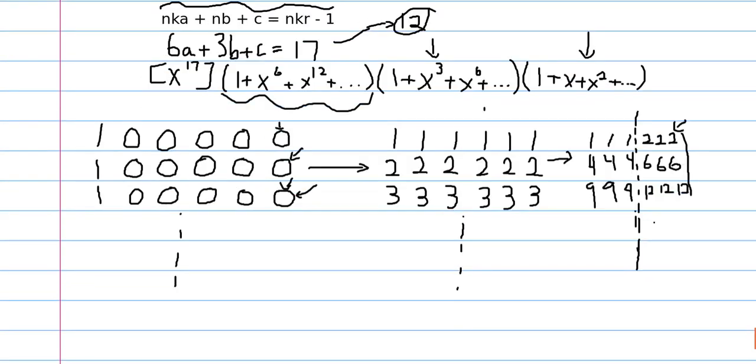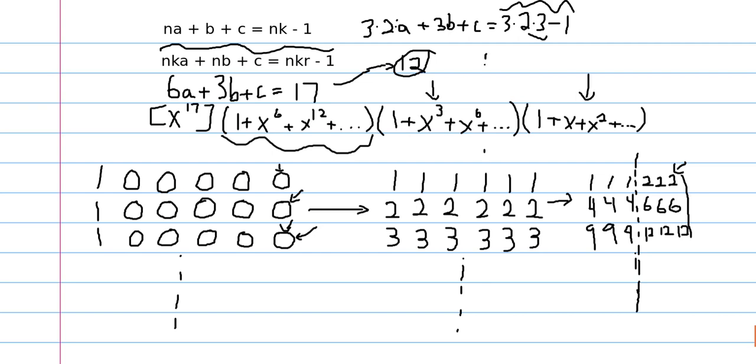And so our answer for the general problem is actually K times R times (R + 1) over 2. And I think the most beautiful thing about this is that this answer doesn't rely at all on N.